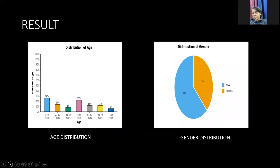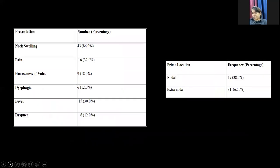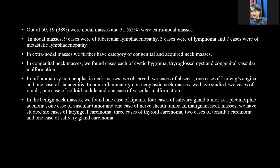Most patients in our study were less than 20 years of age, followed by the age group 41 to 50 years. Males were 62% and females were 38%. Neck swelling and pain was the most common clinical complaint, followed by fever. We further divided the masses as nodal and extranodal. Out of 50 cases, 19 were nodal masses and 31 were extranodal masses.